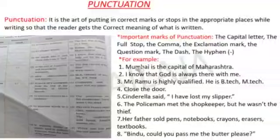The comma is used to separate words in a list. See the example: Her father sold pens, notebooks, crayons, erasers, textbooks. So all the things are separated by a comma.